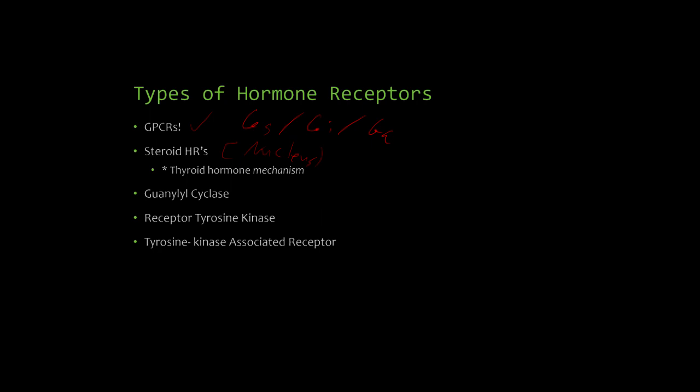Some hormone receptors are coupled to guanylyl cyclase. And remember Gs and Gi, right? Gs activates adenylyl cyclase, Gi inhibits adenylyl cyclase. Guanylyl cyclase does the same thing as adenylyl cyclase but with cyclic GMP instead of cyclic AMP. So guanylyl cyclase will act via cyclic GMP, and that's how it's kind of similar to Gs and Gi.